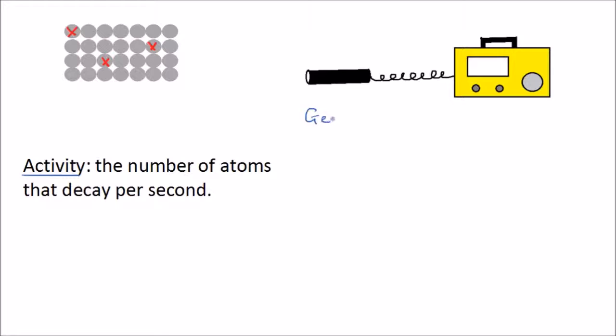So this is a Geiger tube and this is the counter. And it will make a clicking sound every time a particle of radiation enters the Geiger tube and this gives us the count rate. This gives us the count rate in counts per second which we can use to monitor the activity of a sample.